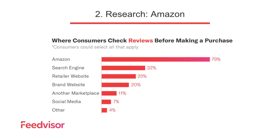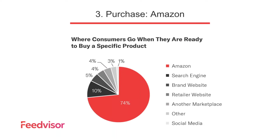Amazon is where people go right at the beginning of their shopping journey. They're also undertaking their research and comparison on Amazon. 79% of consumers prefer to go to Amazon to read reviews before making a purchase. At the research stage, Amazon is also where people prefer to do pricing comparisons. And then at the actual transaction stage, 74% of people prefer to shop on Amazon once they know what they want to order. Amazon has your credit card details, your mailing addresses, one-click checkout — it's so easy, and your purchase is guaranteed.